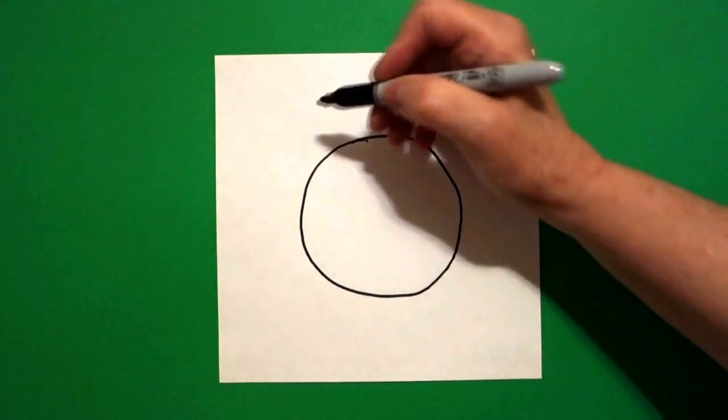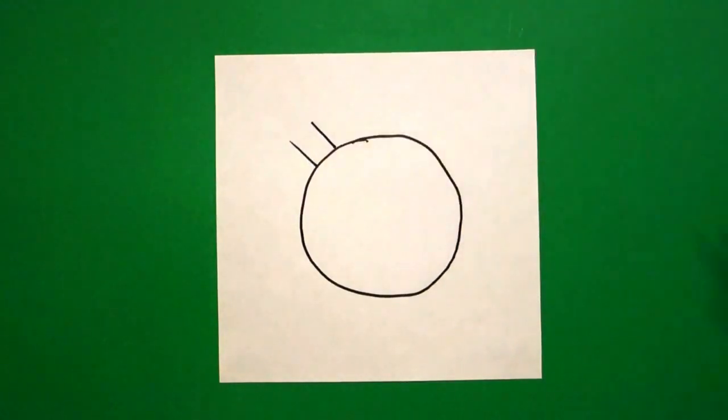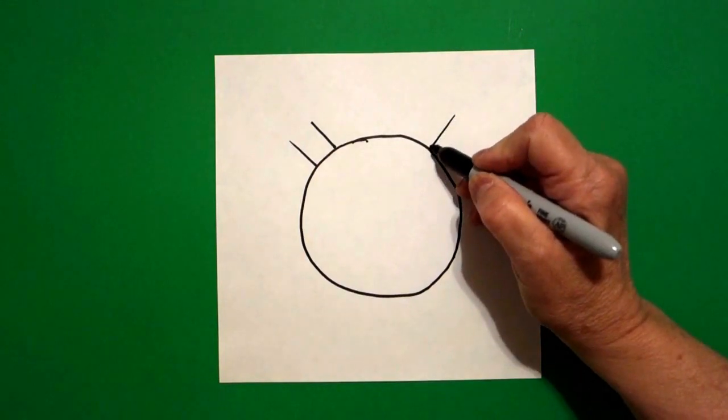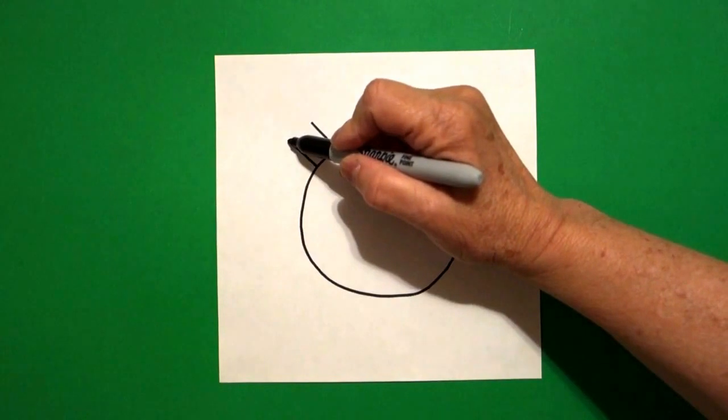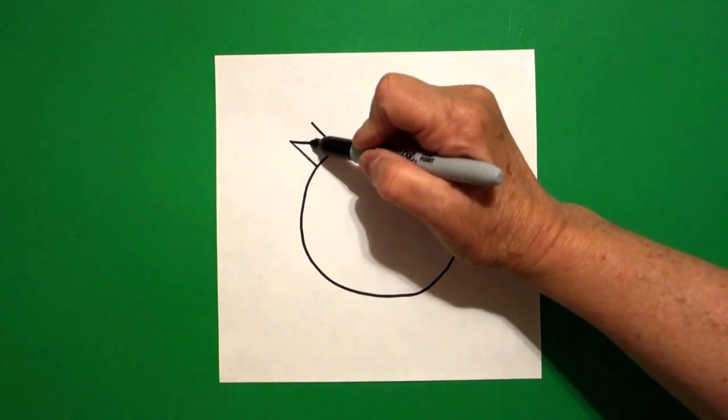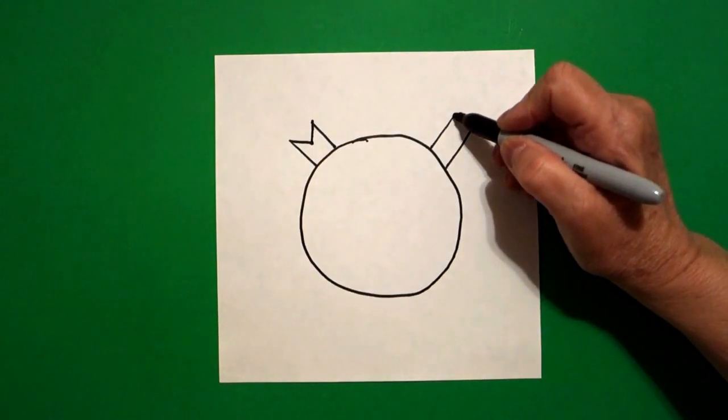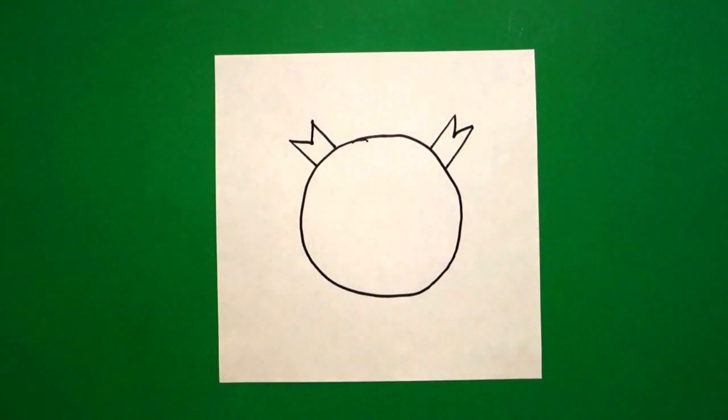Now on the left hand side I'm going to draw one, two straight lines. On the right hand side, one, two straight lines. Come back to the left and draw a straight line in, straight line out, connect. Come to the right hand side, straight line in, straight line out, connect.